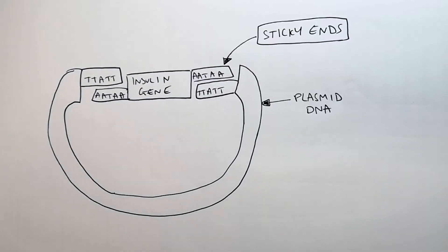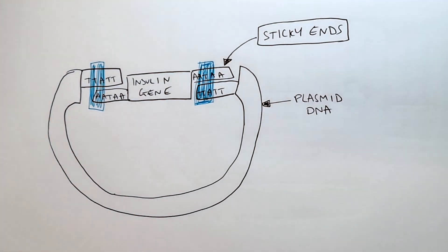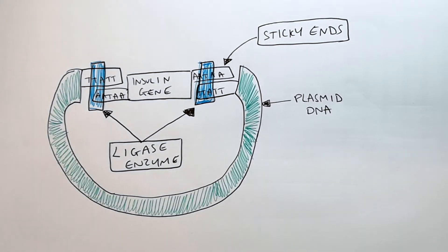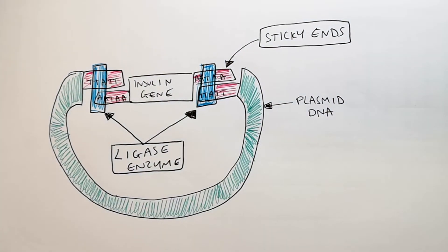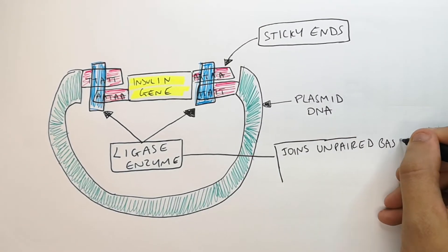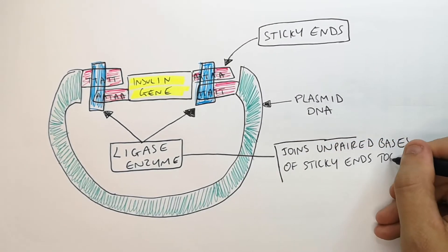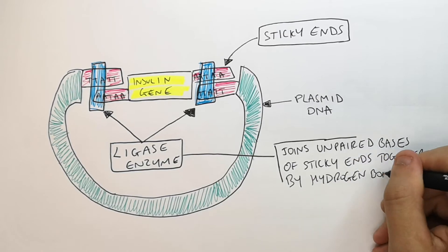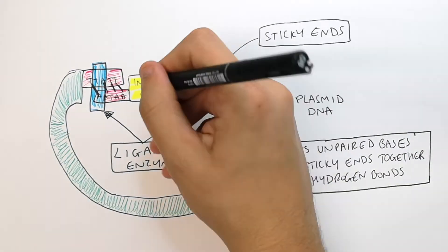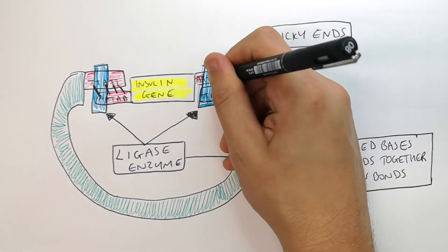The sticky ends of the insulin gene base pair with the plasmid DNA sticky ends. We use an enzyme called ligase. Ligase joins the insulin gene to the plasmid DNA by joining the unpaired bases of both sticky ends together by hydrogen bonds.